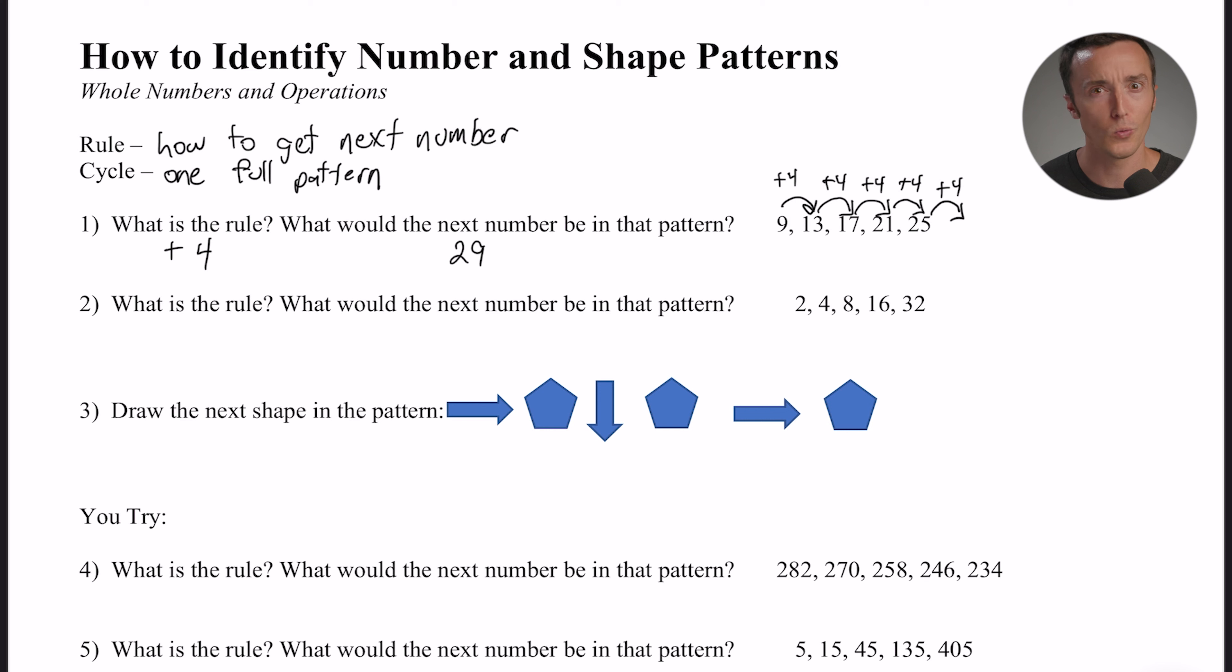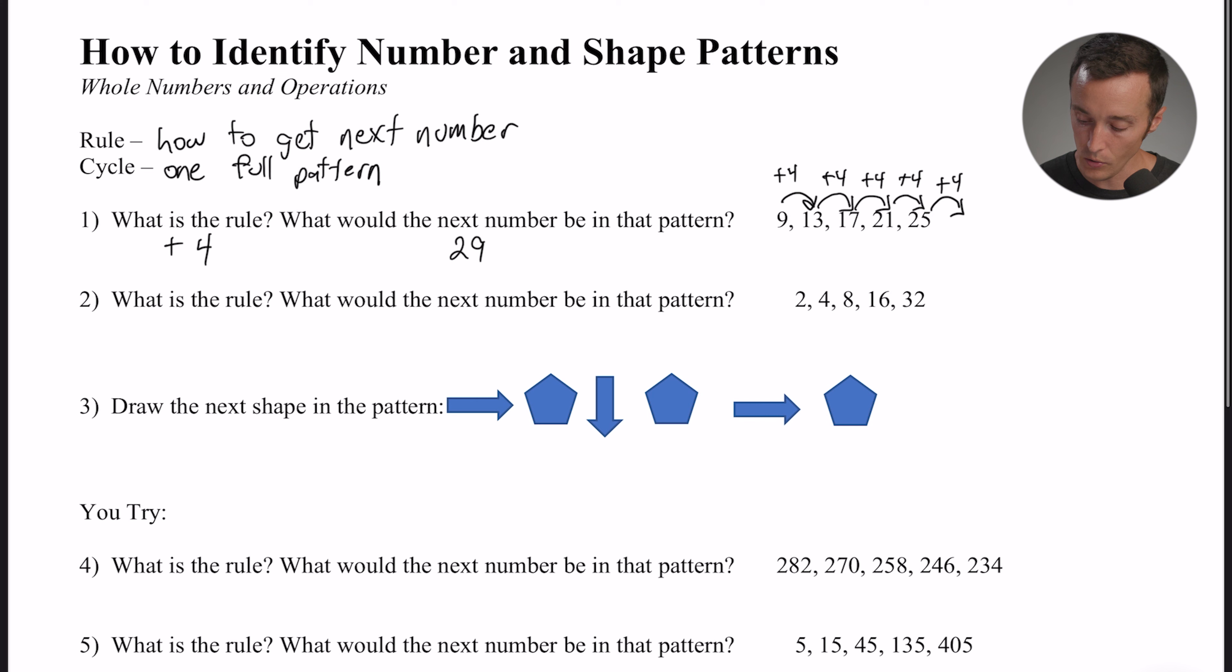And to get there we had to first identify the rule. And again, sometimes the rule can get really complicated, but always just check your basic arithmetic functions first. Okay, number two says what is the rule and what would the next number be? So look, we've got 2, 4, 8, 16, 32. Check this out: how do we get from a 2 to a 4?